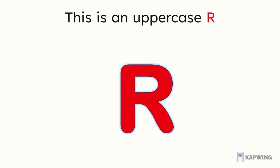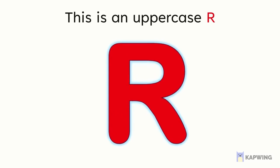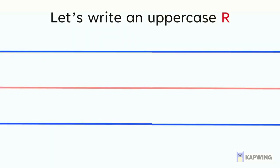This is an uppercase letter R. Let's write an uppercase R together. Can you get something to write on, like a piece of paper or a whiteboard, and something to write with, like a pencil or a marker?